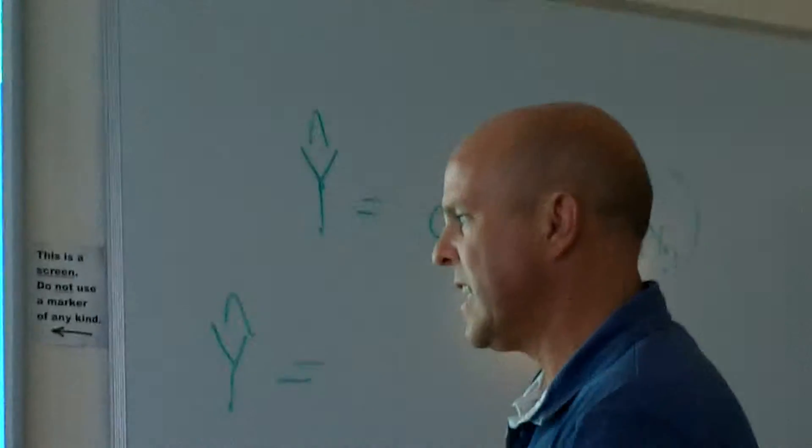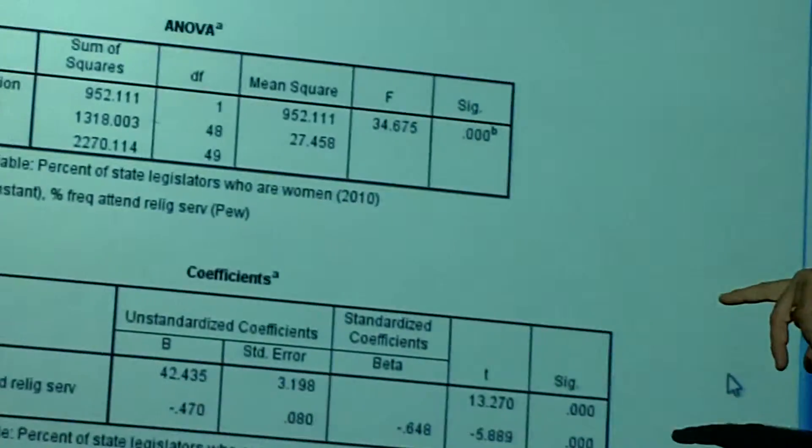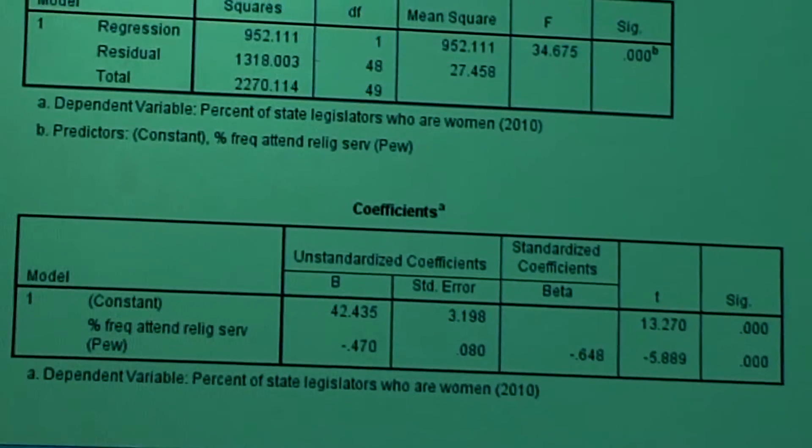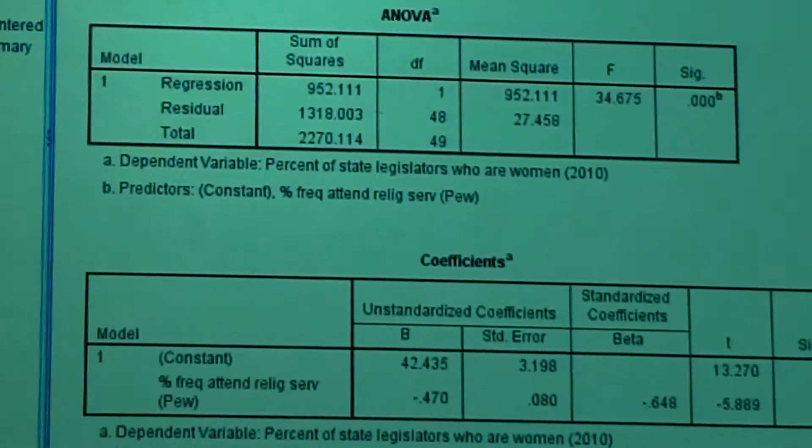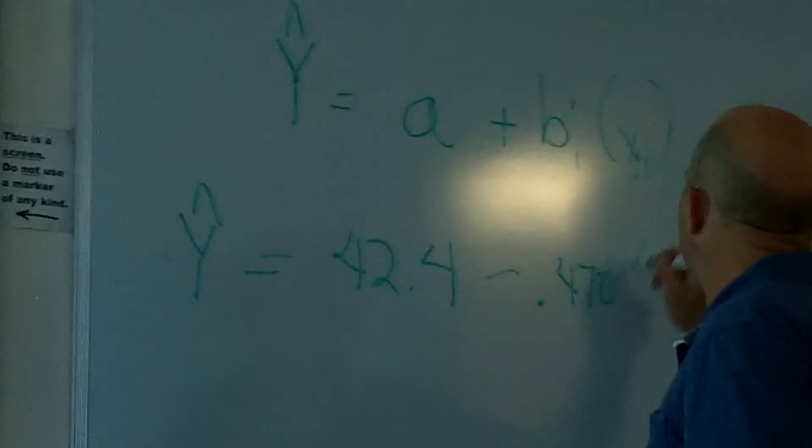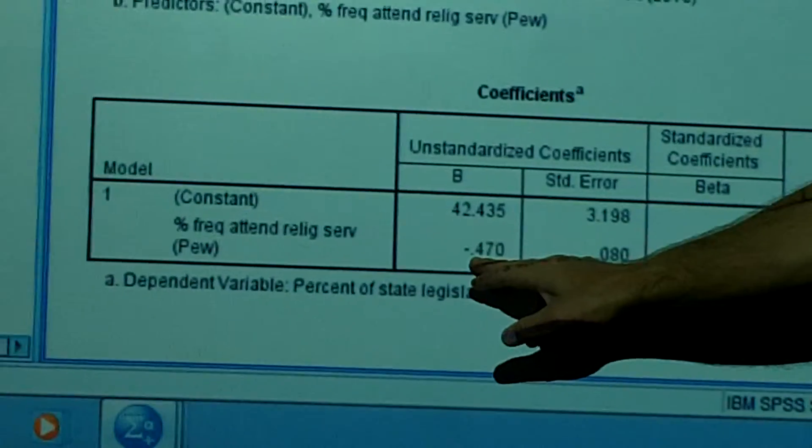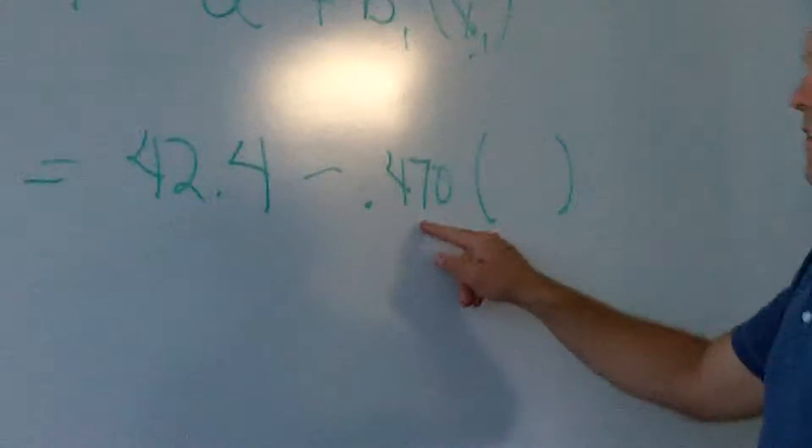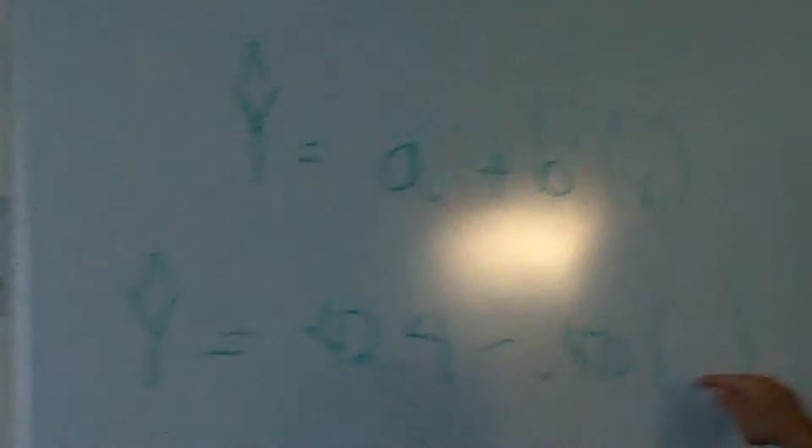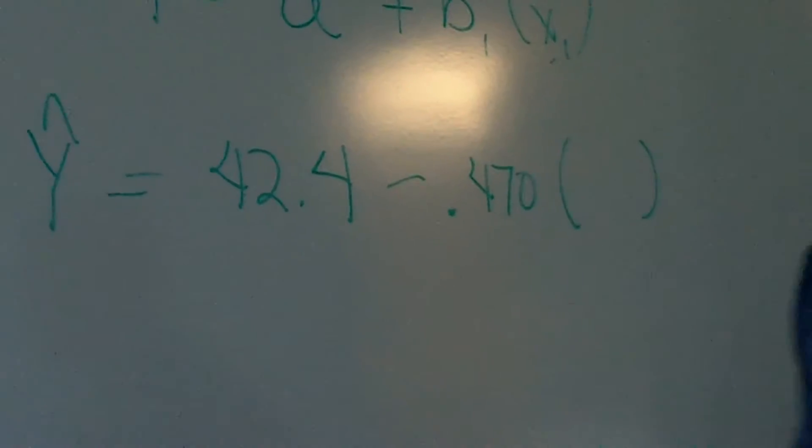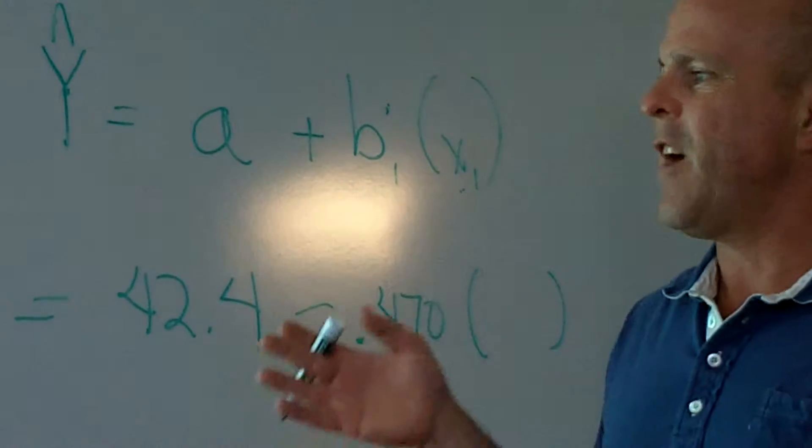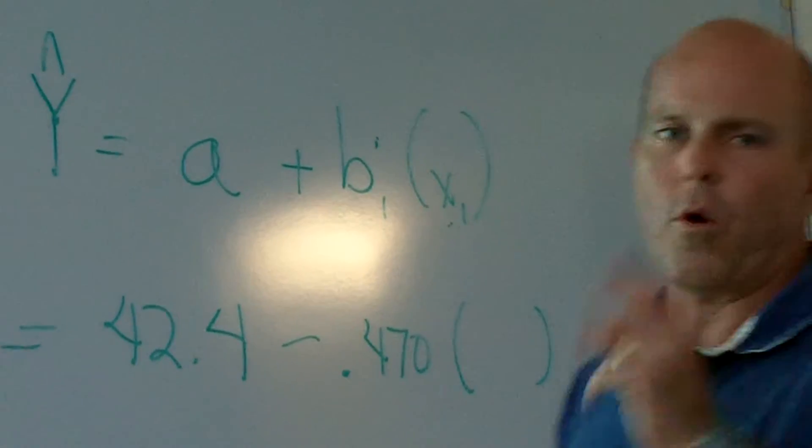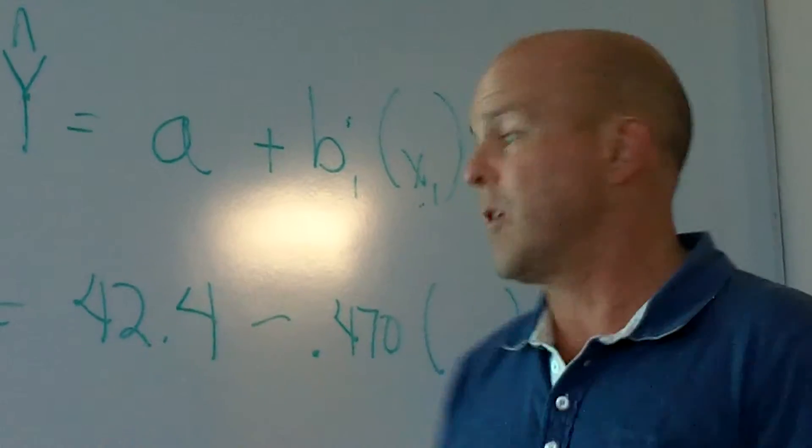So, we might want to predict how many—so here we got our constant right here. And then our coefficient for our one independent variable, which is a negative 0.470. Now we want to substitute in a value to predict what would happen if everybody in that whole state went to church frequently. So, this would be a hundred percent.